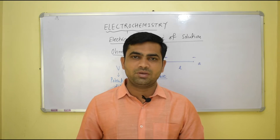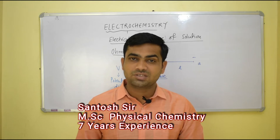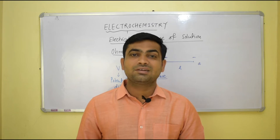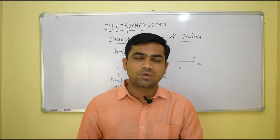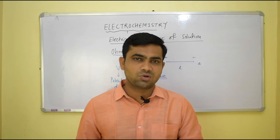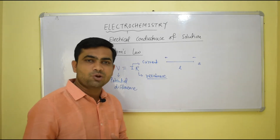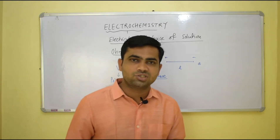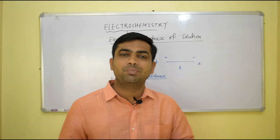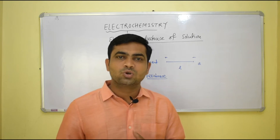Hello, welcome again to Chem Academy. This is our second lecture on electrochemistry. In the last lecture we discussed what electrochemistry deals with, what is an electrochemical cell, its types, electrical conductors — electronic and ionic — and Ohm's law. Let us continue from Ohm's law. If we keep the physical state of the conductor constant — length, cross-sectional area, mass, temperature — then the current flowing through the conductor is proportional to the potential difference applied across its two ends.